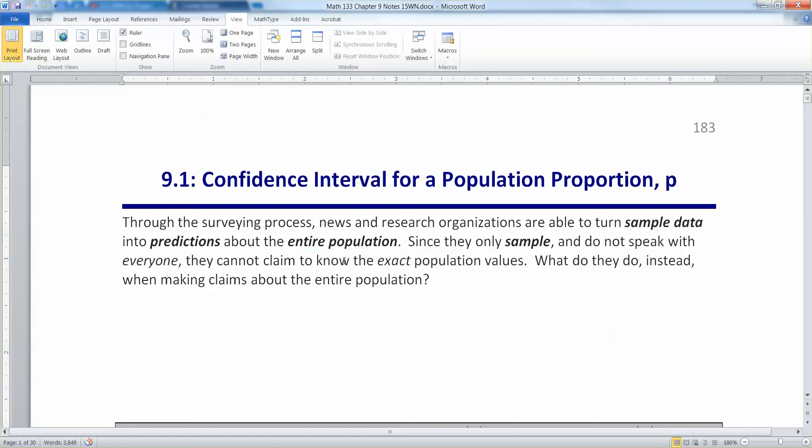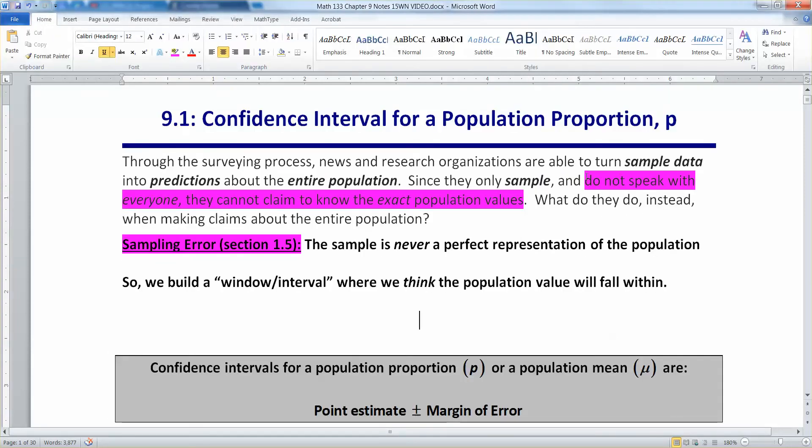So they don't speak to everyone. They cannot make a claim about the exact population values. That's section 1.5. It's having to do with sampling error. So they can't claim to know the exact population value. What we're describing there is something called sampling error, which we learned about in section 1.5. It's saying that a sample is never a perfect representation of the population. By virtue of the fact that it's small, it can never be exactly representative of the population.